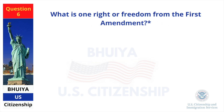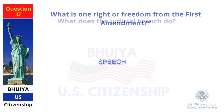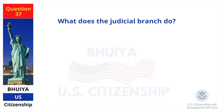What is one right or freedom from the First Amendment? Speech. What does the judicial branch do? Reviews laws.